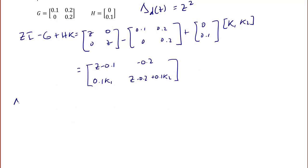Delta of Z is the determinant of ZI minus G plus HK, which is equal to Z squared plus the quantity 0.1 K2 minus 0.3 times Z plus 0.02 K1 minus 0.01 K2 plus 0.02.